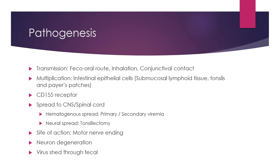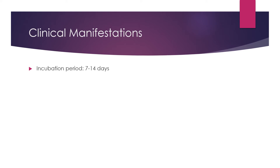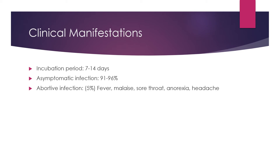Clinical manifestations: the incubation period is usually 7 to 14 days. Manifestations may range from asymptomatic to the most severe paralytic stages. The first broad category is asymptomatic (inapparent) infection — the majority of cases, accounting for 91 to 96 percent. Abortive infection accounts for about five percent of patients who develop minor symptoms like fever, malaise, sore throat, anorexia, myalgia, and headache.